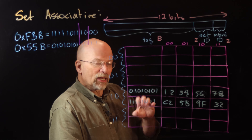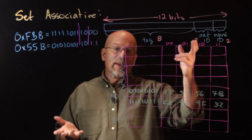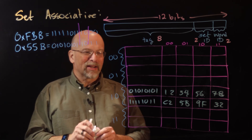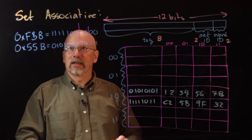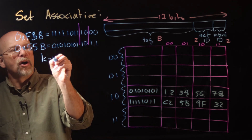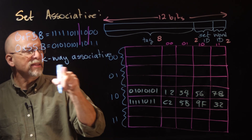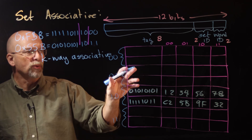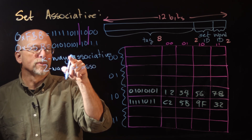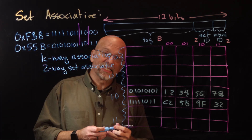As you get larger and larger sets, you get closer and closer to fully associative. Basically, fully associative is just one big set. With set associative, we call it K-way associative, with K being the number of lines per set. So this example is two-way set associative — meaning there are two lines per set.